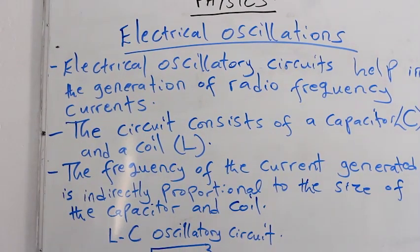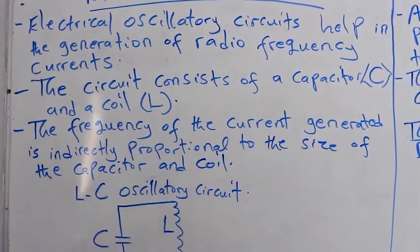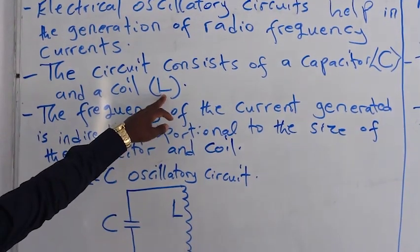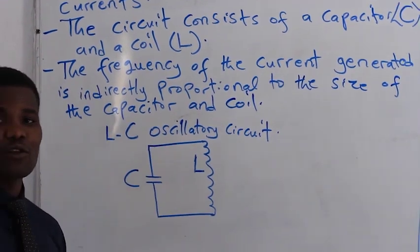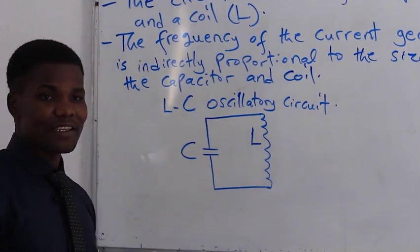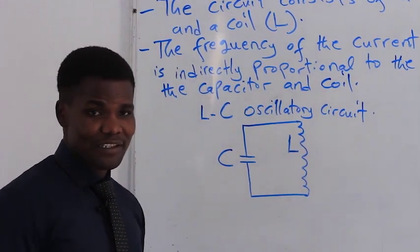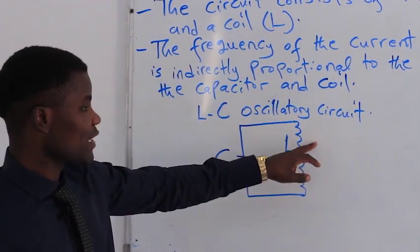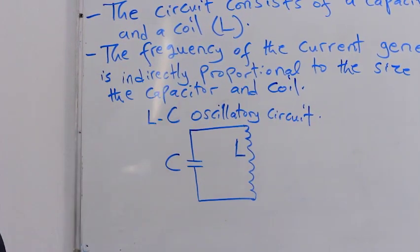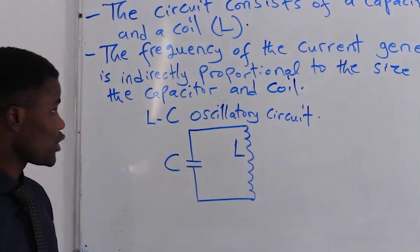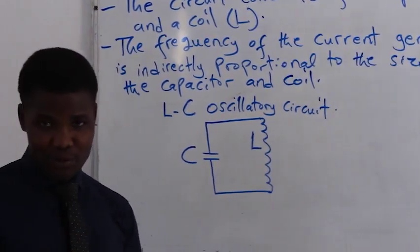A circuit consists of a capacitor, denoted by the letter C, and a coil, denoted by the letter L. The coil allows current to flow through it. When power is supplied from the voltage source, the current is excited to flow through the coil. The frequency of the current generated is inversely proportional to the size of the capacitor and coil.